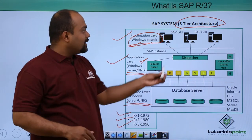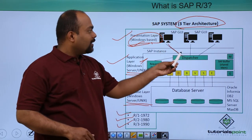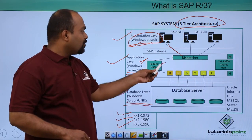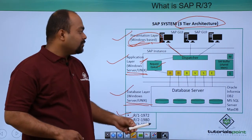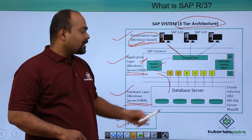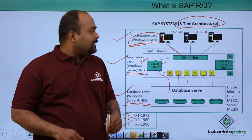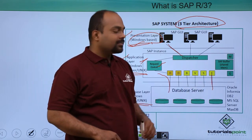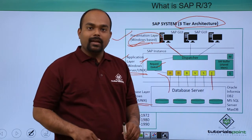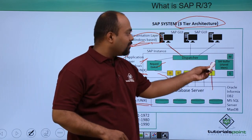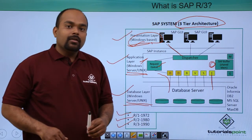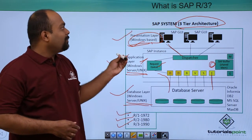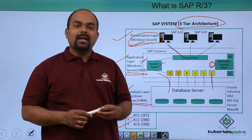Data entered by the end user goes to the dispatcher, then to the request queue, and afterwards to the database layer. The database layer sends back a reply. There is also a buffer in SAP. This is how the SAP R3 structure works.